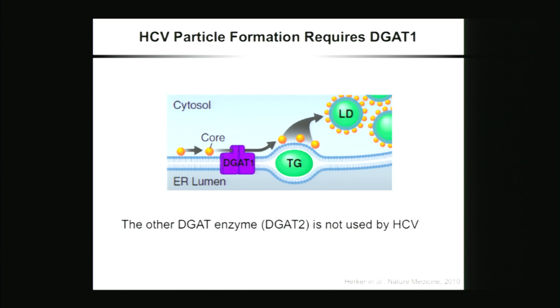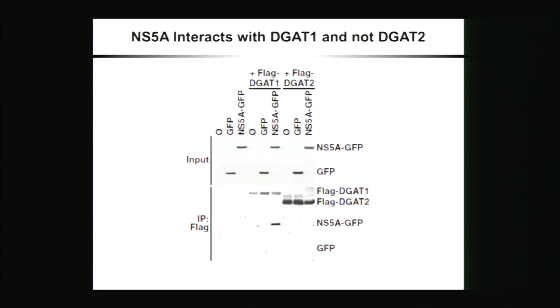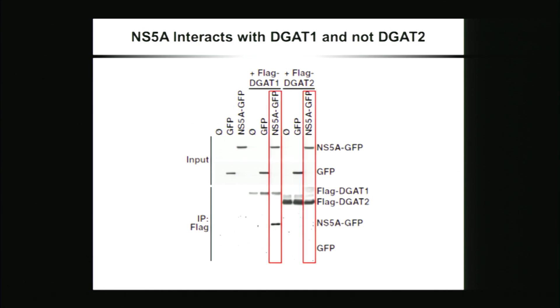Following this research, we wanted to further understand the mechanism that DGAT1 is involved in during HCV replication. I should mention that the other DGAT enzyme, DGAT2, cannot be used by HCV, which shows its specificity. To further understand the molecular mechanism, we screened most of the HCV proteins for interaction with endogenous DGAT1, and found that DGAT1 not only interacts with core but also with non-structural protein NS5A—specifically with DGAT1 but not with DGAT2. We were able to replicate this interaction between endogenous DGAT1 and NS5A in the context of HCV infection.